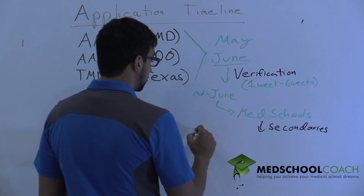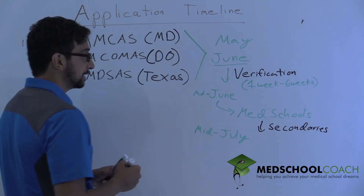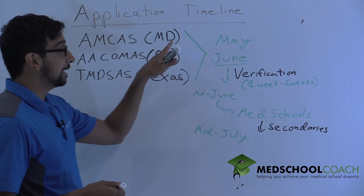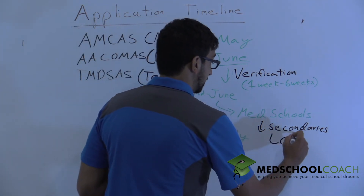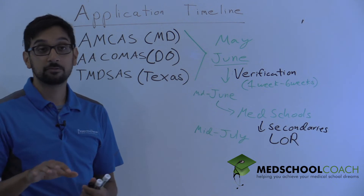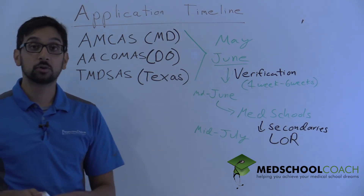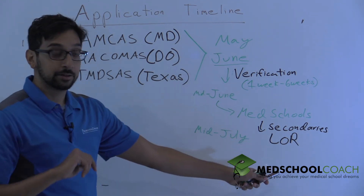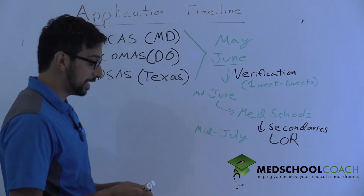Really, the earliest you're talking about someone evaluating your application is mid-July — plus or minus a little bit. In order for them to evaluate your application, they need it to be verified, they need your secondaries submitted, and they also need your letters of recommendation. Letters of recommendation can be collected at any point and sent through various channels — directly to AMCAS, through Interfolio, or through your school's pre-professional office. Essentially, you've got to have your letters of recommendation, your secondaries, and the application fee all in before a school evaluates your application.